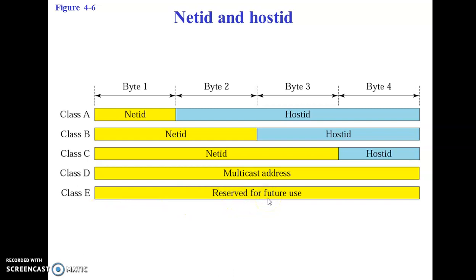With this we have learned about the IP address for version 4, which is 32 bits long, and it has five different classes which are A, B, C, D, and E. Thank you.